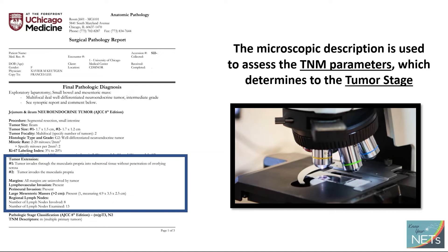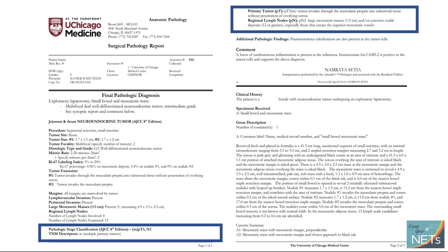After the grade, we come to the synoptic report. The points listed below don't need to be gone through individually, because we combine them to come up with the T, N, and M stage. That T, N, and M stage determines what the clinical stage is going to be. In the University of Chicago pathology system, the T, N, and M are listed at the bottom of the report, though it could be different at other institutions.